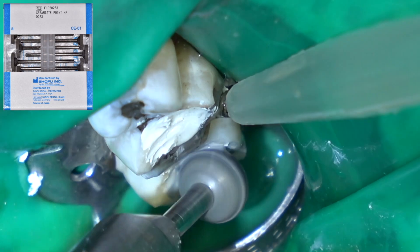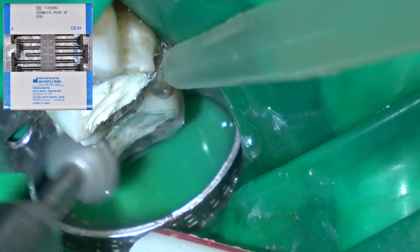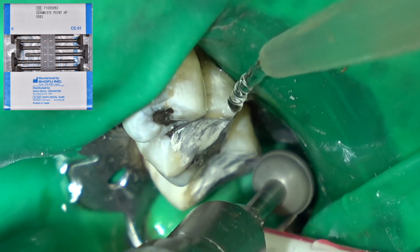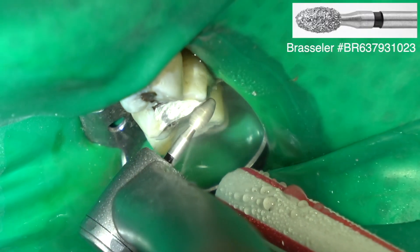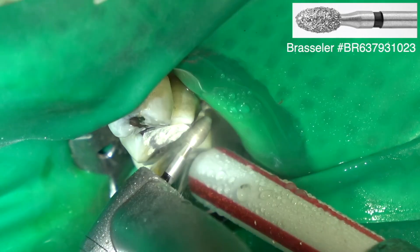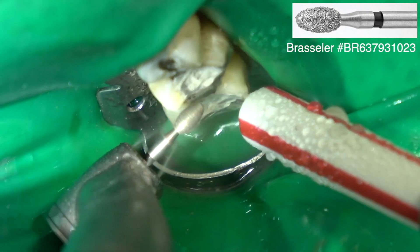Then once it sets, I come back with this rubber wheel sometimes and just polish it a little bit. Round the edges so you don't have any sharp edges. We're obviously going to place crowns on these teeth at a forthcoming appointment.